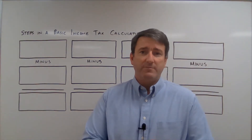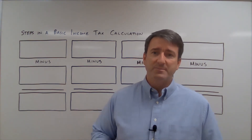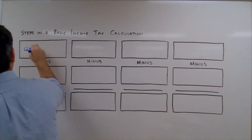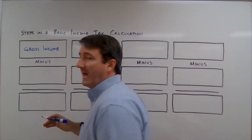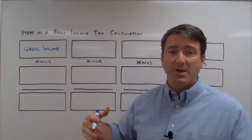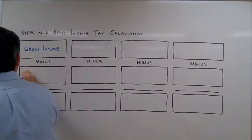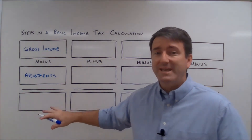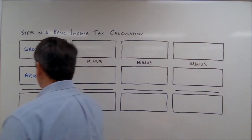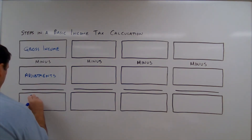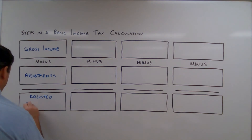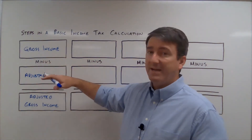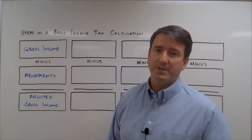Now that we know some of the terms involved, let's walk through the steps in a basic income tax calculation. We're going to start with gross income, and then subtract our adjustments to the income. Gross income minus adjustments equals adjusted gross income.